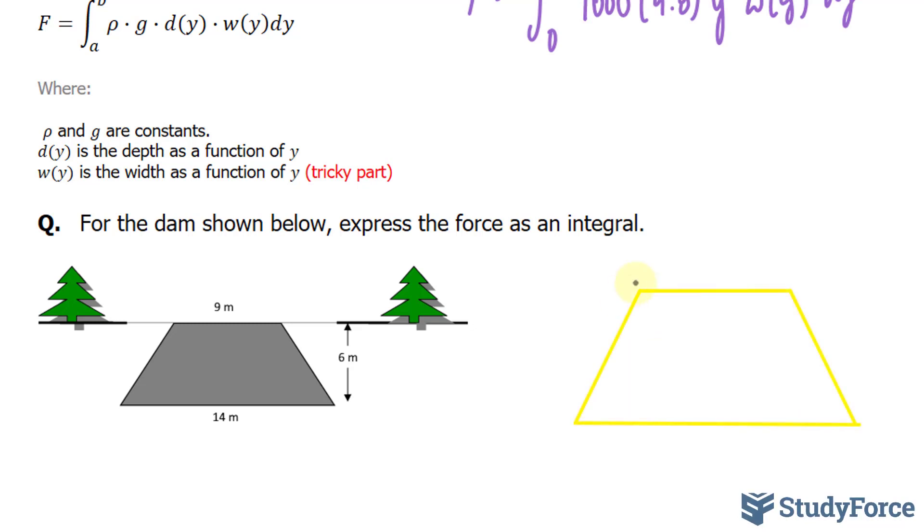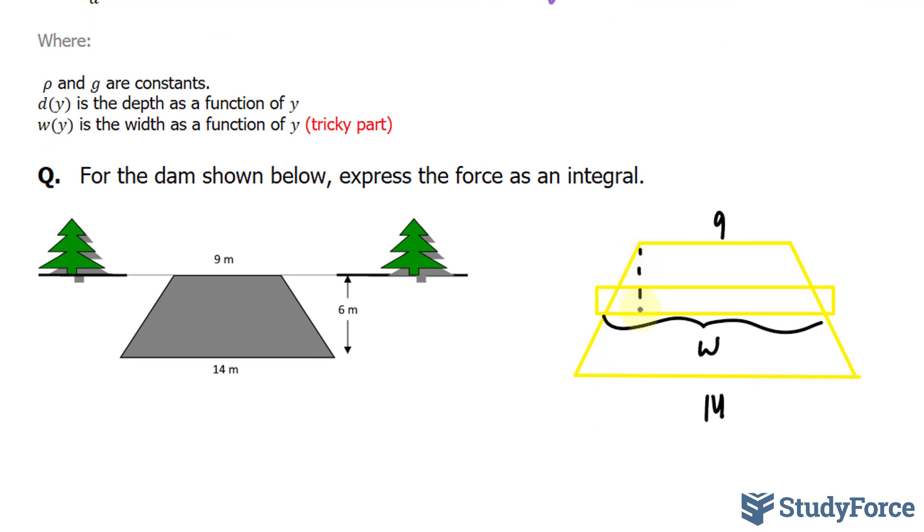Okay, what you see on your screen is a trapezoid. This side is 9, this side is 14, and the height of this trapezoid is 6. Keep that in mind. If I were to draw a rectangle along the x-axis, the rectangle would have an unknown width of w. And this width will change depending on where you are along the y-axis. We have to come up with an equation that relates y and w. So what I will do is segment this trapezoid into two right triangles, and this part right here is a rectangle.